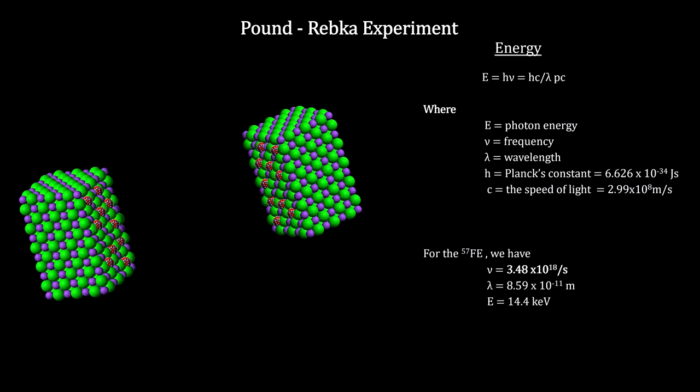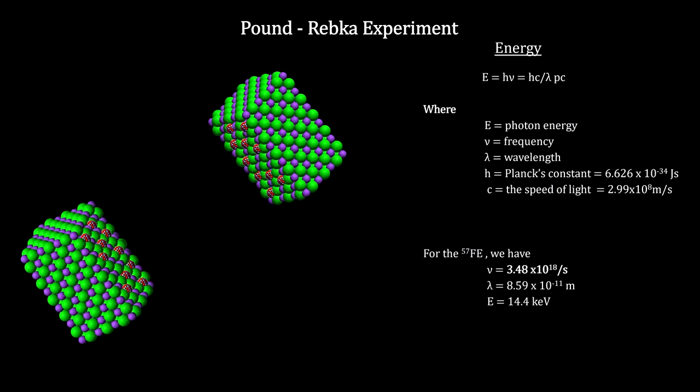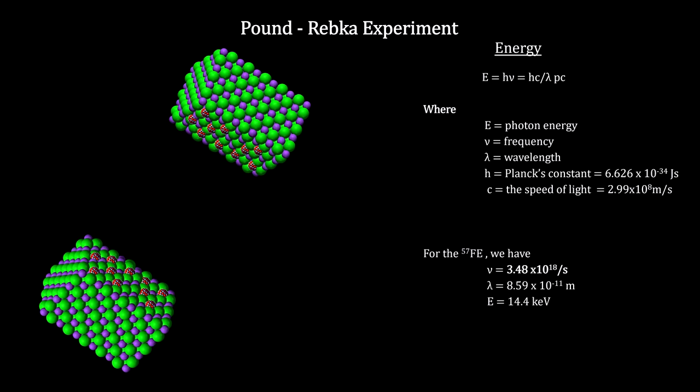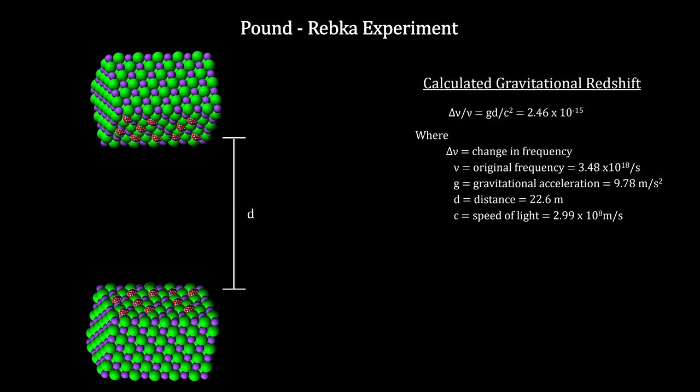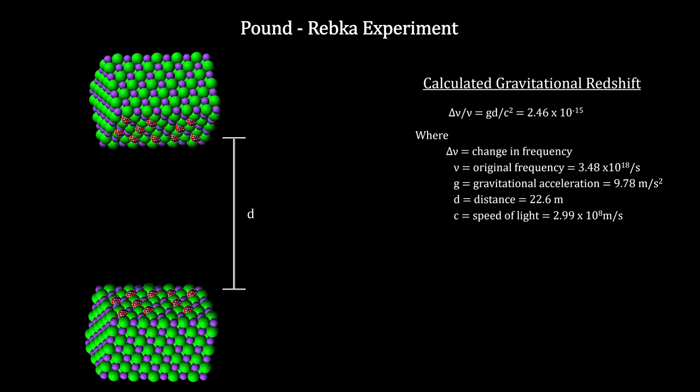Pound-Rebka used this Mossbauer effect. They placed an emitter at the bottom of a tower in the laboratory and installed a detector 22.6 meters above it. No absorption was detected because gravitational redshift changed the frequency of the emitted gamma rays so no energy match existed in the detector.